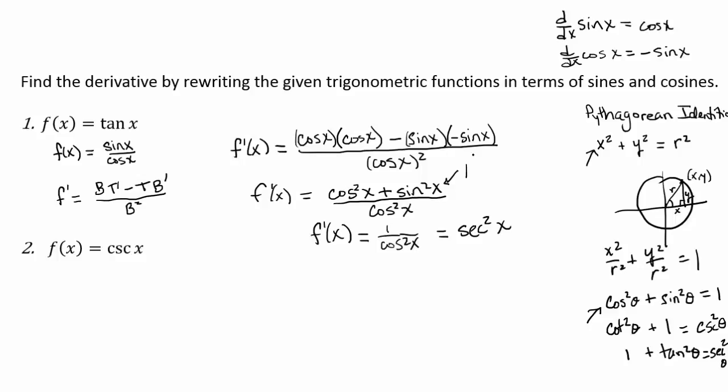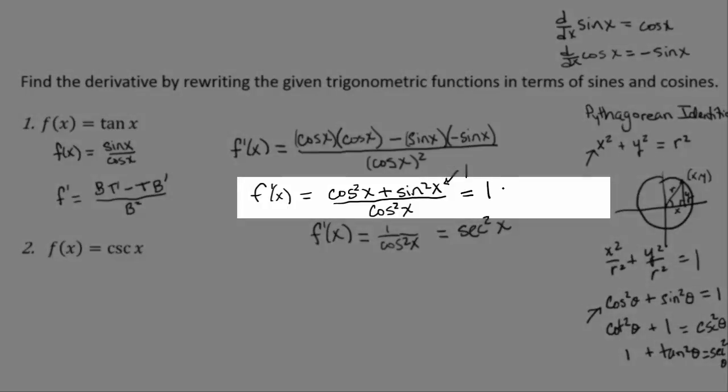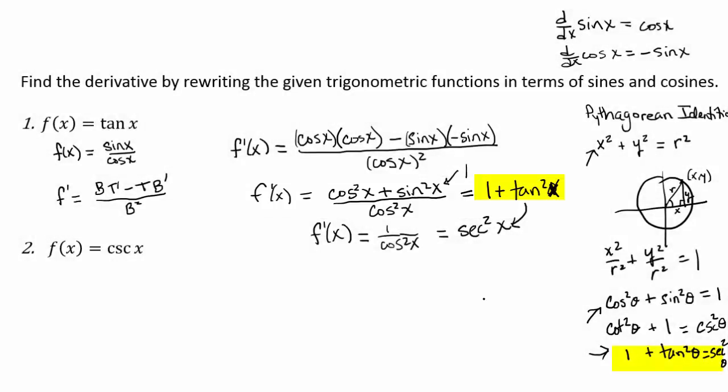So what's another way another person might have worked this out? They might have divided each part by cosine squared. And then what would happen? You get one plus, what's sine squared over cosine squared? Tangent squared of x, which again, because of this third Pythagorean identity, is still gonna be equal to secant squared.